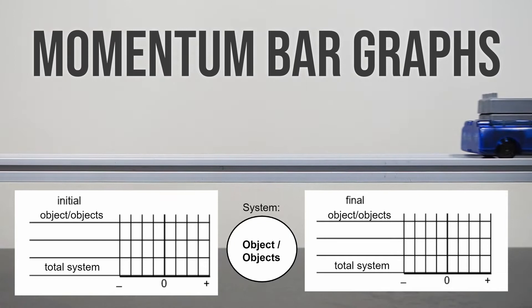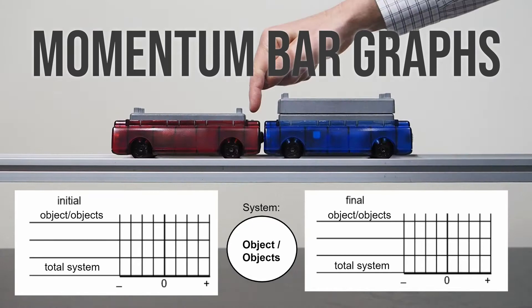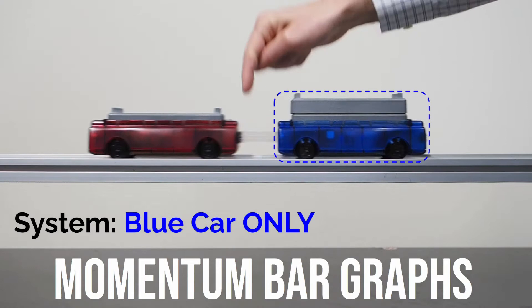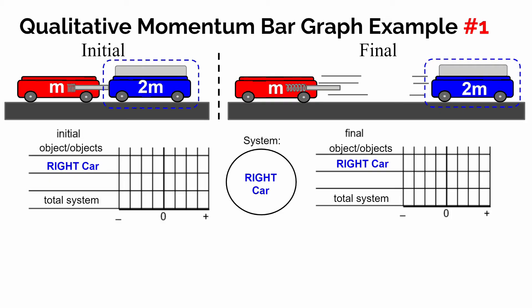To introduce using this tool we're going to look at a situation where two carts are pushing off of one another. They both start at rest, and one cart gets pushed to the right gaining some velocity; the red car gets pushed to the left also gaining some velocity. We're going to first start out by defining our system as the blue car only — imagine we draw a dashed line around the blue car — and ask where the momentum is stored before this explosion, where it's stored afterwards, and is there any change.